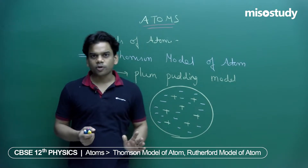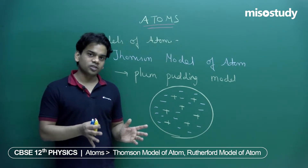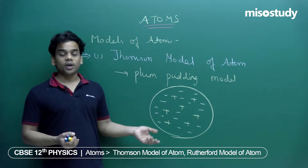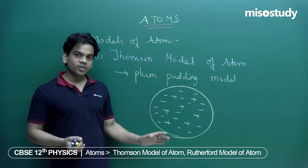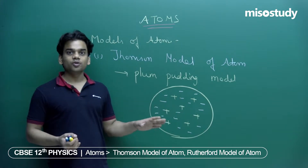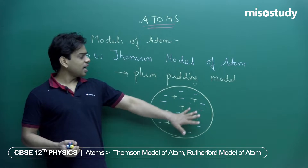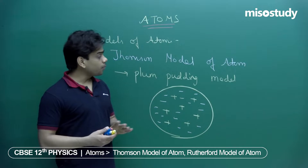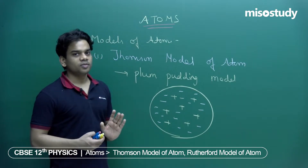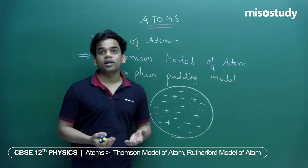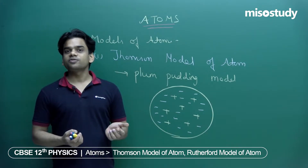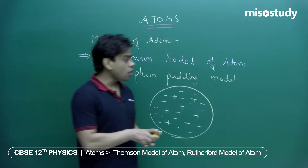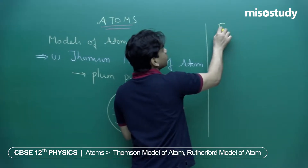This model was not based upon experiments. He knew that an atom may have positively and negatively charged particles. To neutralize the atom, he used the plum pudding model — positive charges embedded throughout, with negative charge filling the entire volume. But this model actually failed. Let's talk about the failure of the Thomson model.